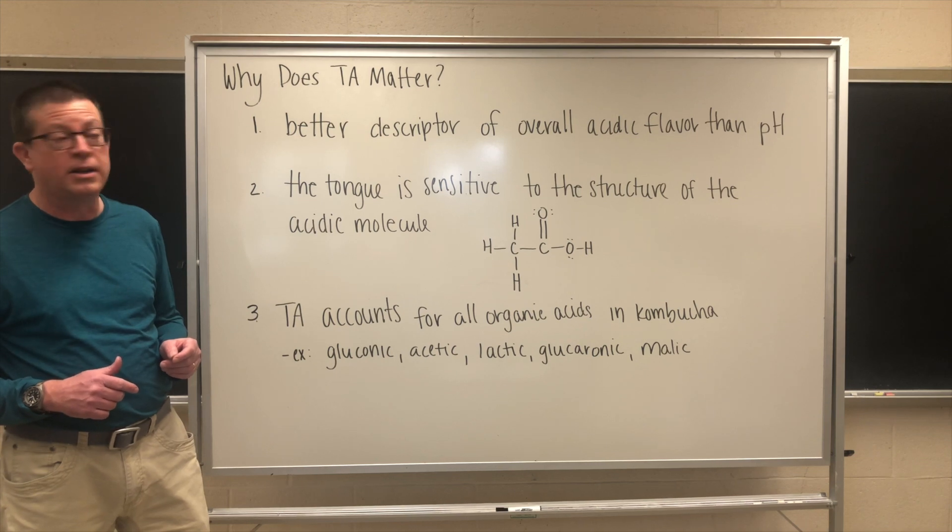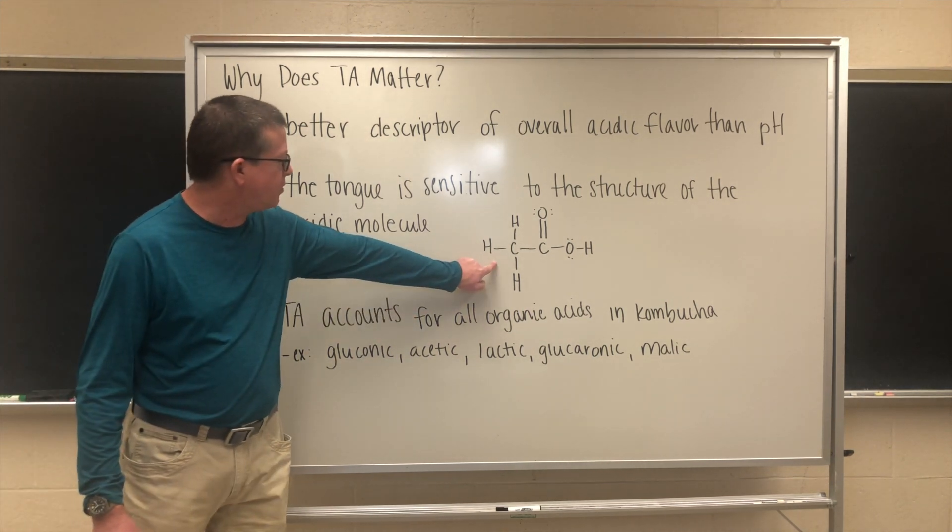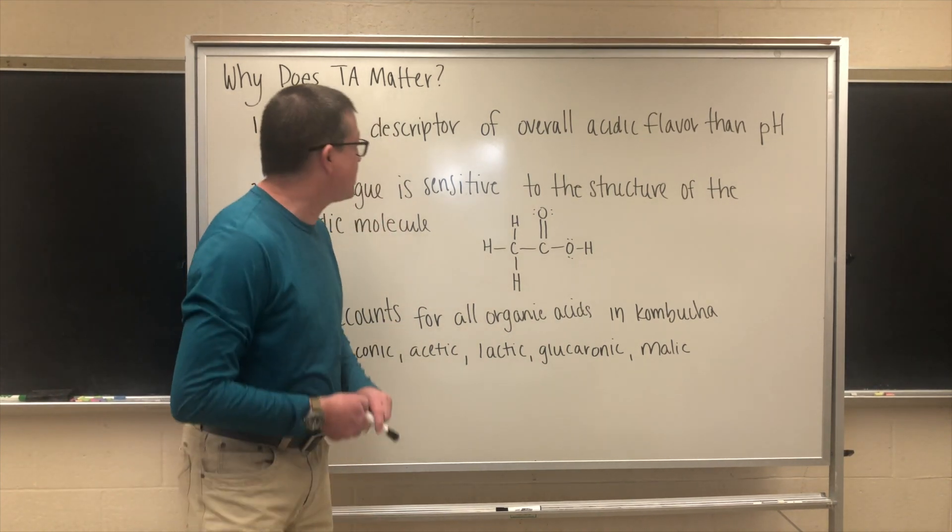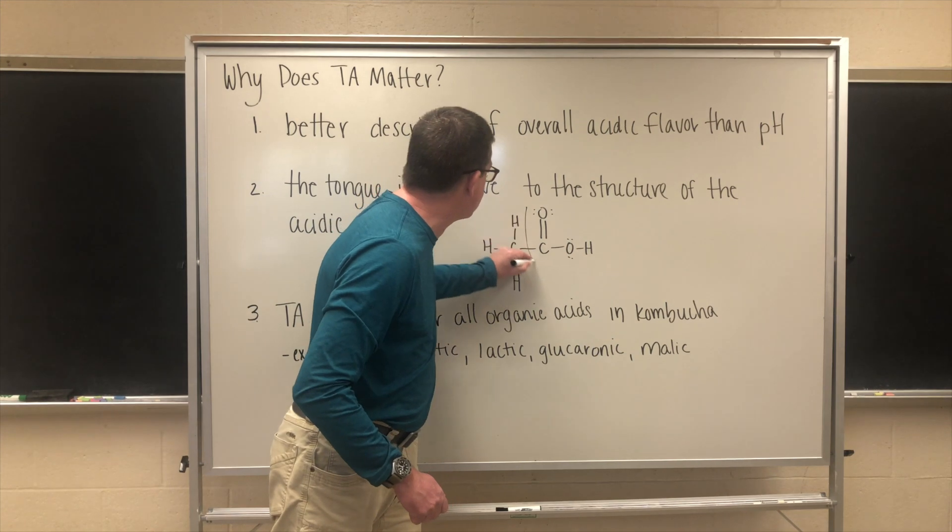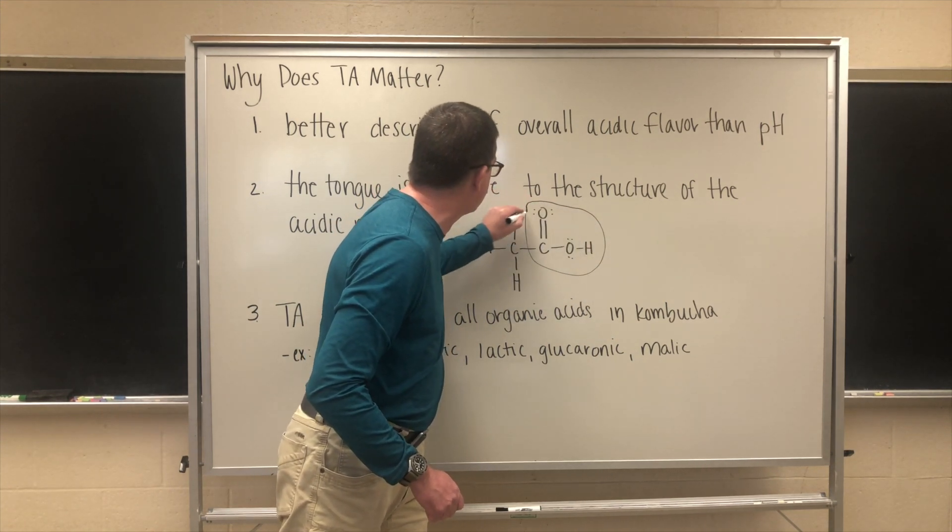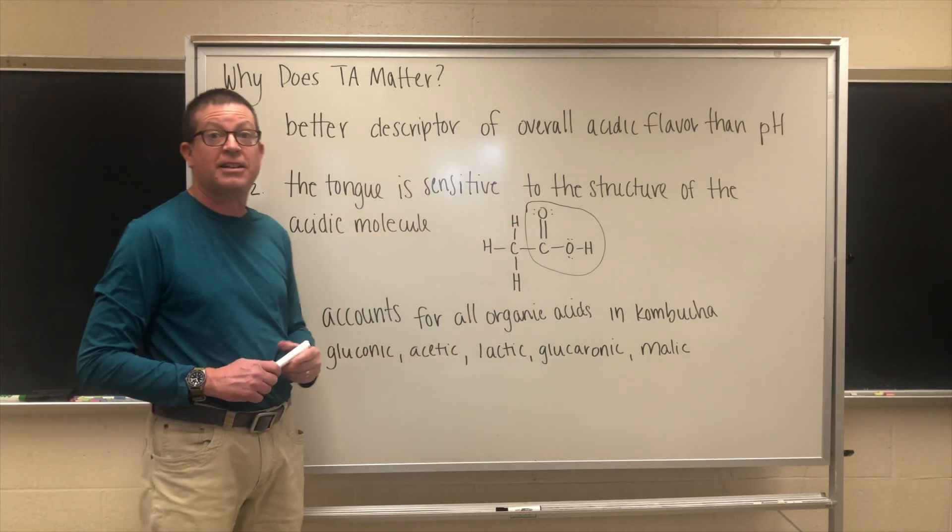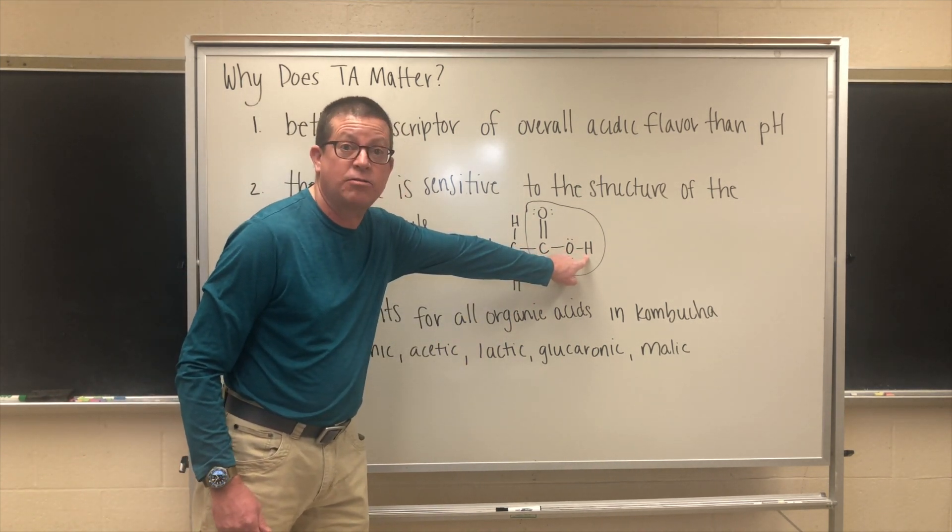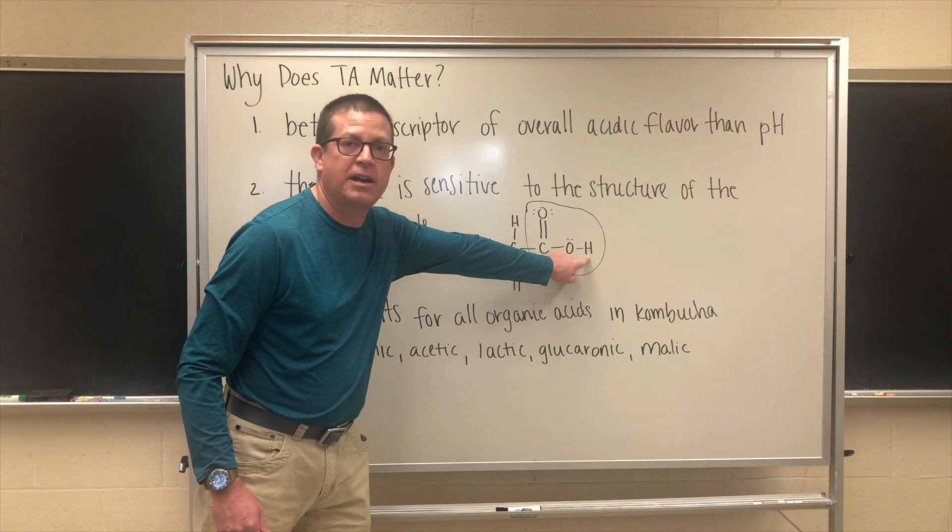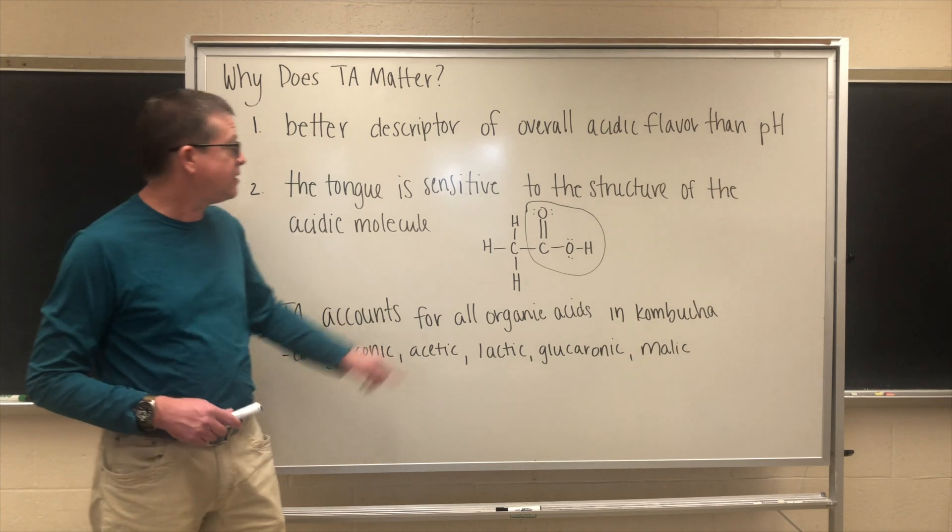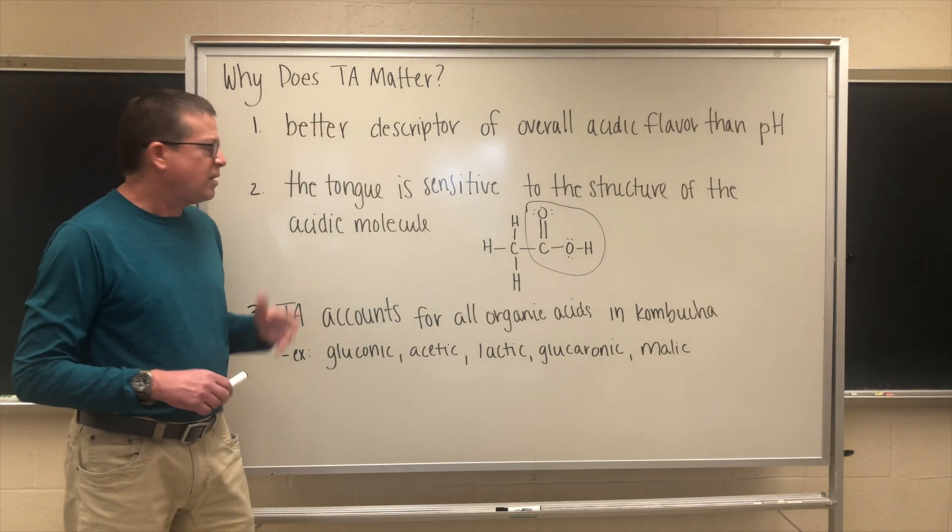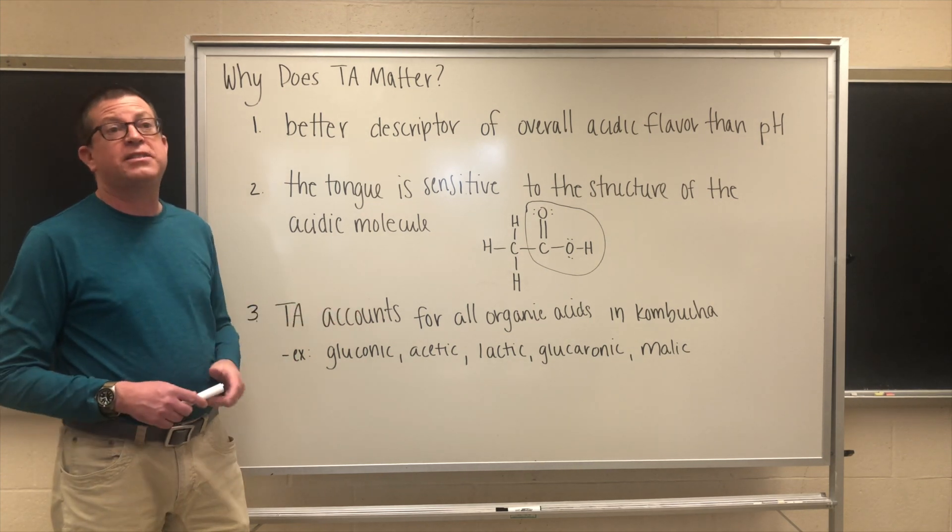The tongue is sensitive to the structure of the acidic molecule. Let me give you an example. Here's a molecule of acetic acid. We can discuss the acidic group in acetic acid - this is the part of the molecule that makes acetic acid an acid. As a matter of fact, it's this hydrogen right here that's the acidic hydrogen. This is the one that's donated out into solution. The variation in all of these acids is over here in this part to the left. Acids in general tend to be sour.